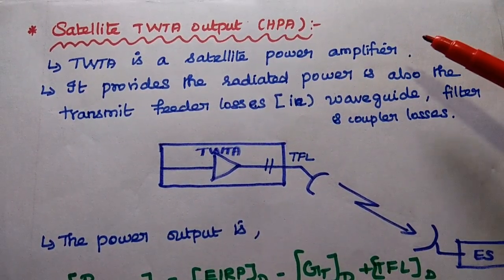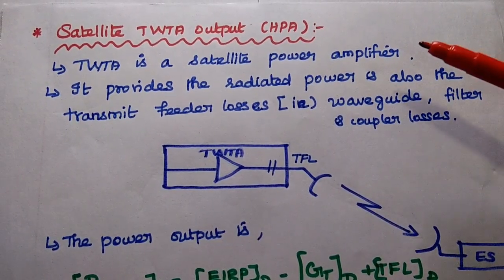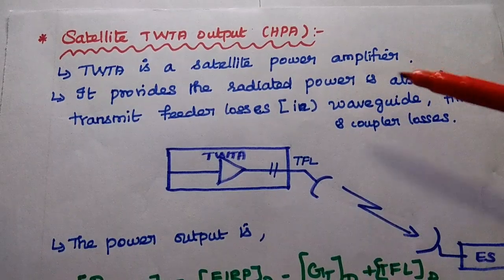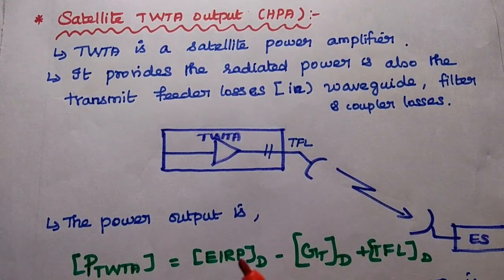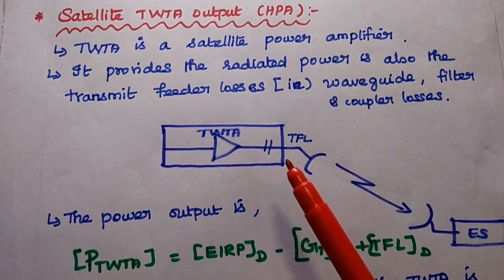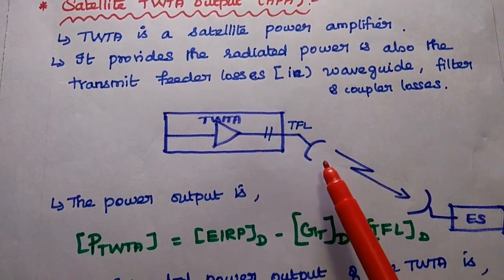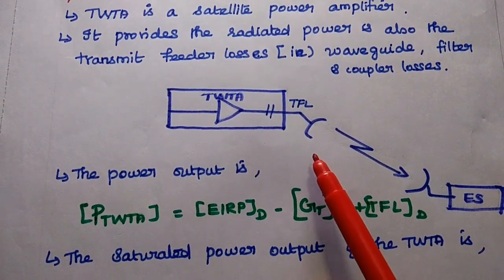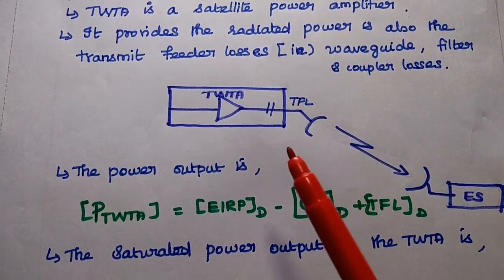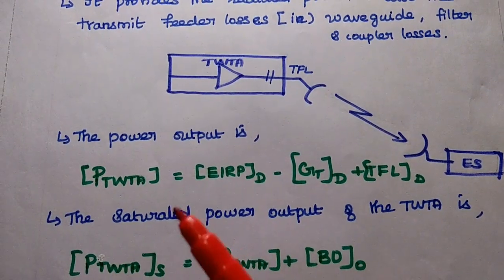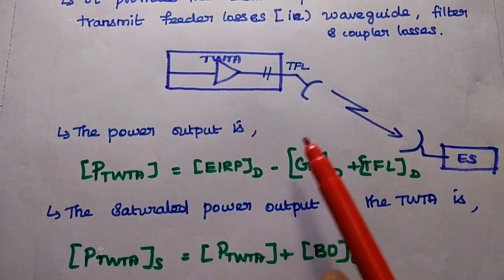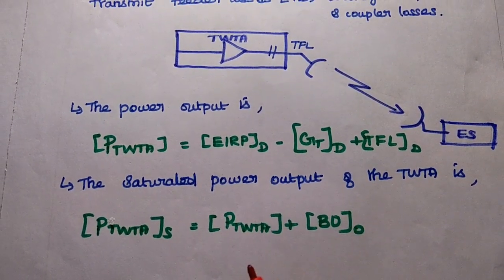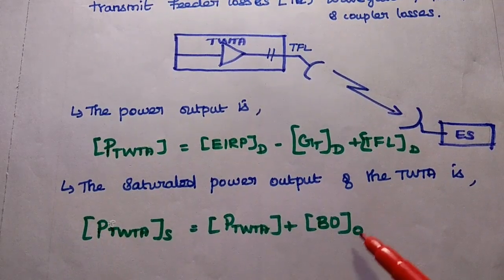Finally, the satellite TWTA output power. The earth station TWTA output is not considered here as it is the terminal point; only the satellite TWTA output is considered. The satellite TWTA — the power amplifier (Traveling Wave Tube Amplifier) — provides radiated power and transmit feeder losses between the TWTA and the transmitting antenna in the satellite. TWTA power = EIRP_D − G_t + TFL. For saturated power output: P_TWTA + backoff output.